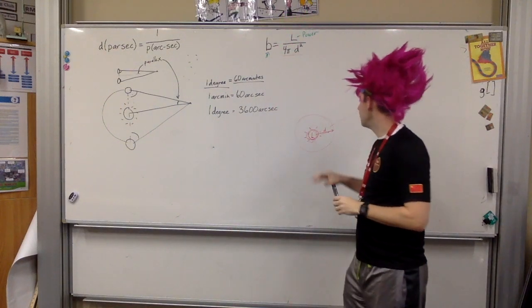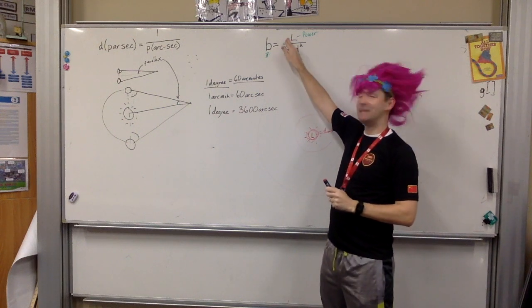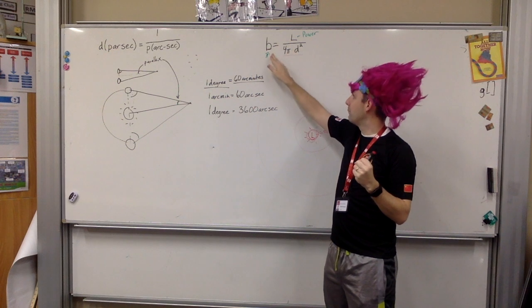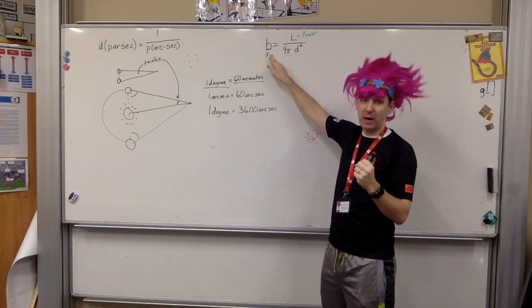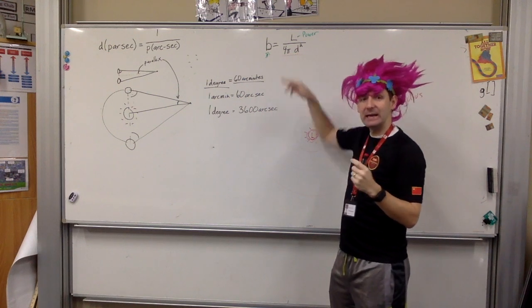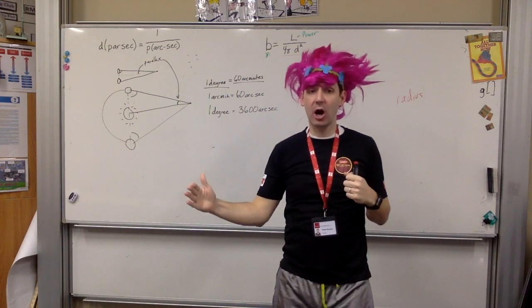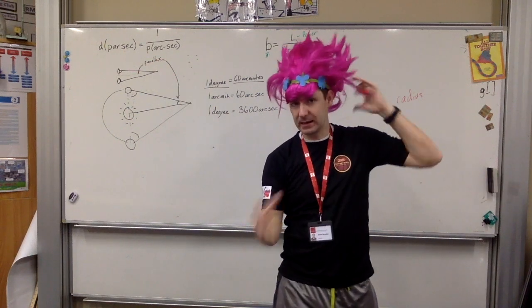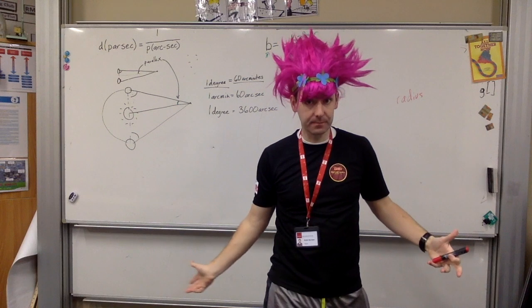So that's going to be important here, just remembering L is the amount of power that's actually being put out by the star. B is the apparent brightness, how bright does it appear to be. And d is the distance you are from the star, because that is the radius of the sphere of light, where the light has been spread out in all directions.